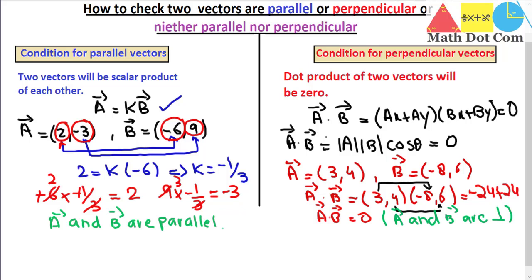But what if the given vectors are neither parallel nor perpendicular? You can check that easily: first check if the dot product equals zero — if not, the vectors are not perpendicular. Then check the scalar multiple condition. If we get a scalar value k but it does not satisfy the condition consistently for all components, then the two vectors are neither perpendicular nor parallel.